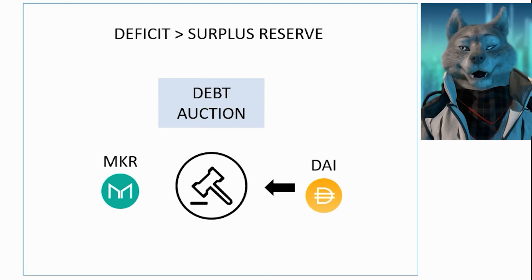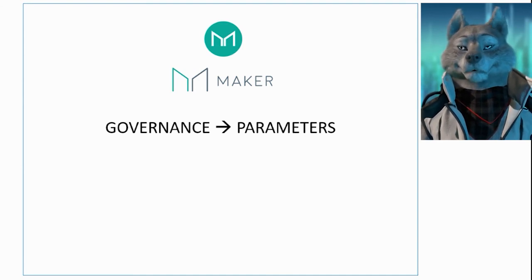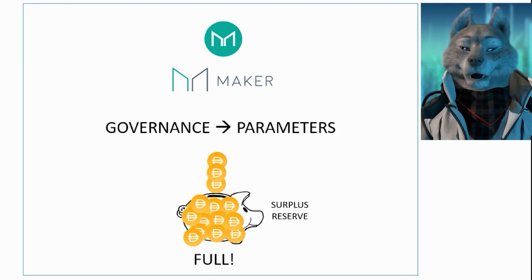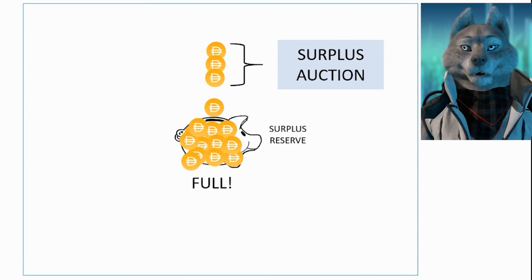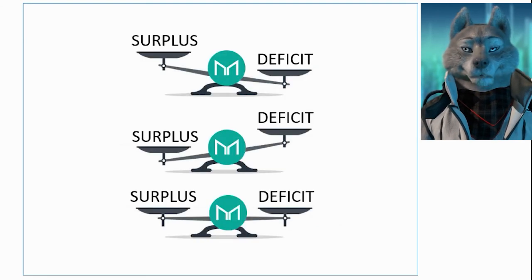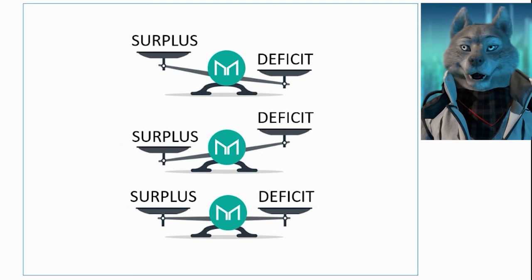These MKR tokens correspond to the Maker project, which is responsible for the governance of the DAI token. MKR token holders can vote on the parameters of the system, deciding on important values such as the collateral limit for settlement, auction criteria, and more. They also decide on the upper limit of the surplus reserve. If the surplus reserve has more money than this limit, the extra amount will go to a surplus auction where DAI tokens are sold in exchange for MKR tokens, which are then burned. Thus, the supply of MKR tokens is regulated by the system situation, decreasing when the system is robust and increasing when the system is in deficit.